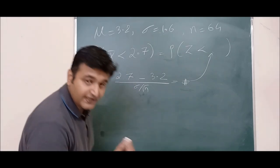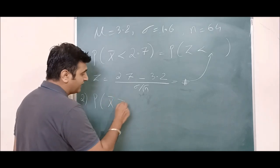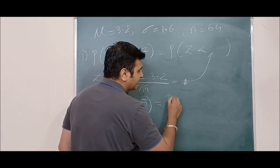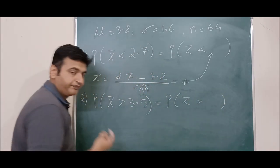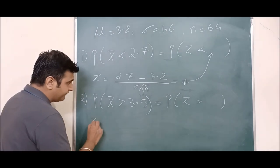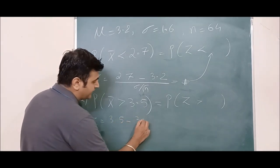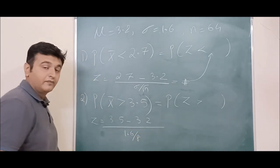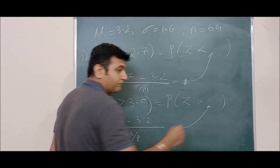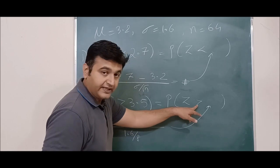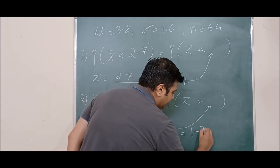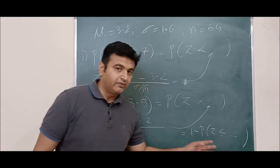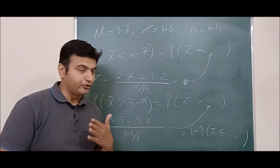For part b, find the probability that the mean time is more than 3.5 minutes. Compute z = (3.5 - 3.2) / (sigma / sqrt(n)). Since we need P(z > value), we use 1 minus the table value — one must be careful here, as the normal distribution table gives areas to the left.